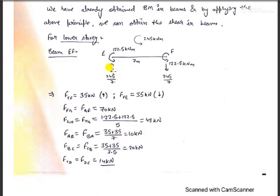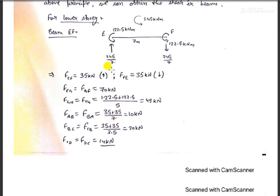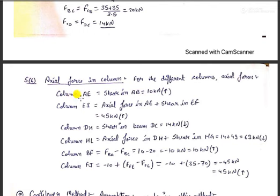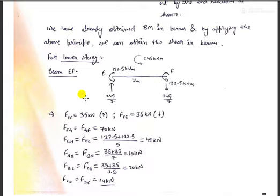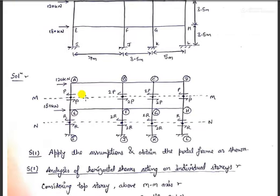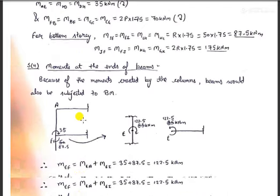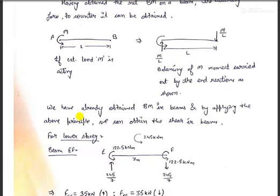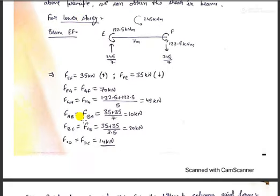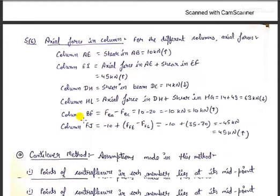Having obtained the forces at the ends of the beams, by the equilibrium concept we can determine the axial forces acting in the adjoining columns. For beam EF, the force was acting in the downward direction, so the adjacent column would have an axial force in the upward direction. Whatever direction the shear force was acting in the beam, the opposite direction gives the axial force in the adjacent column. Using that concept, we have determined the axial forces in the columns, and thereby the whole portal frame has been analyzed.